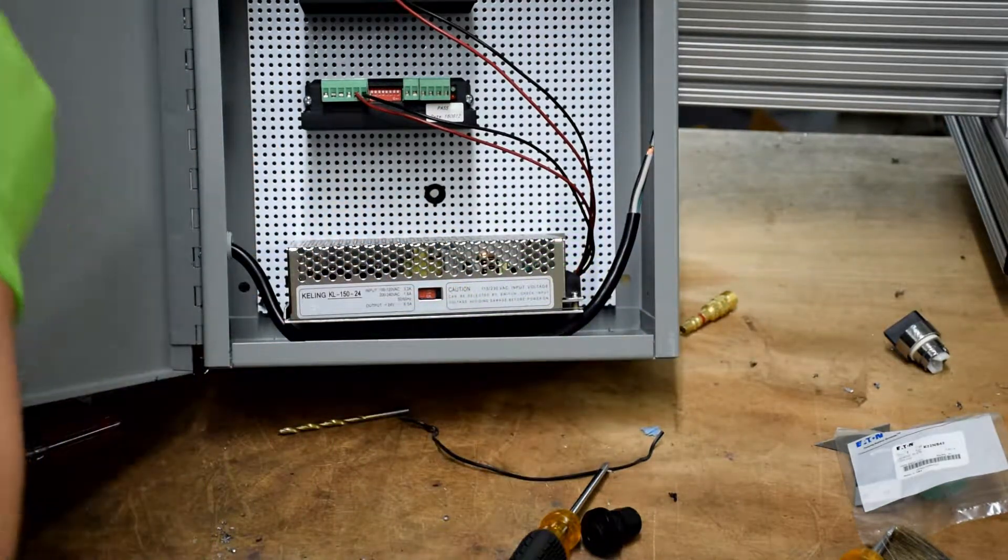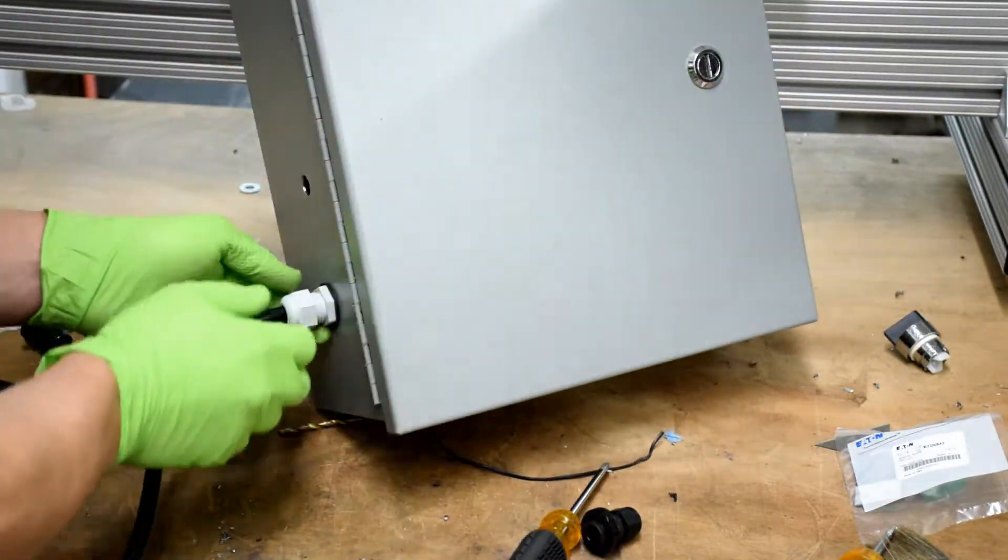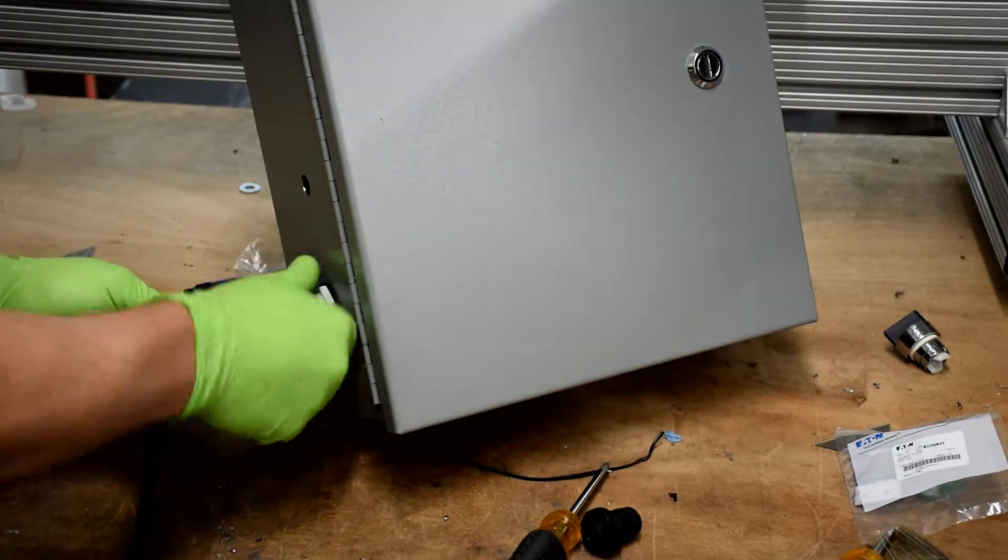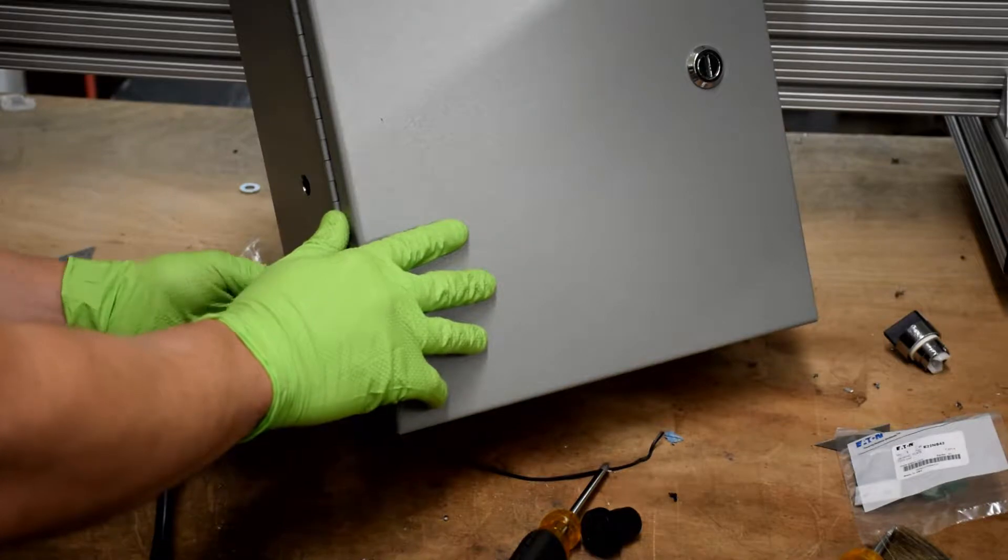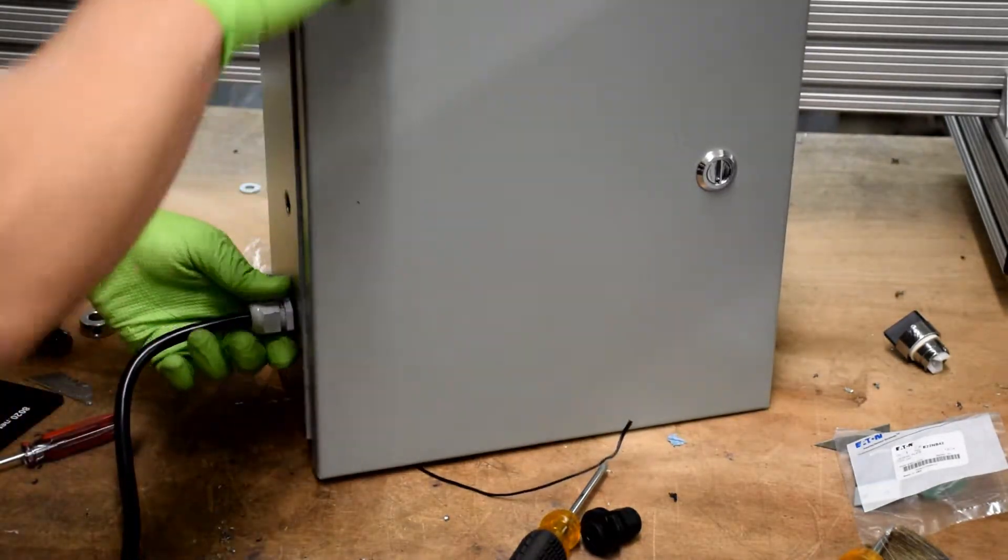I route this down below the power supply, but in reality it could just go straight in or anywhere into the enclosure. Just do that to keep things clean. Once you've got it where you want it, go ahead and tighten down the nut on the outside.